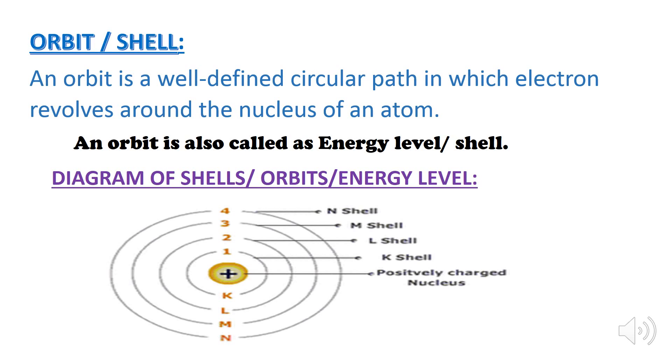So, what is an orbit? An orbit is a well-defined circular path in which the electrons revolve around the nucleus of an atom.